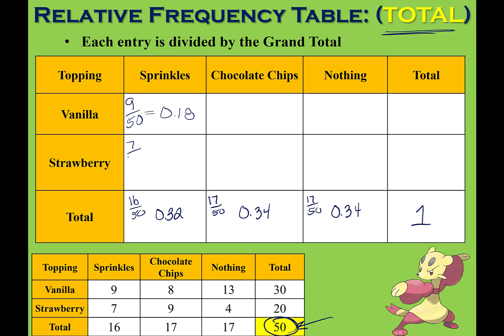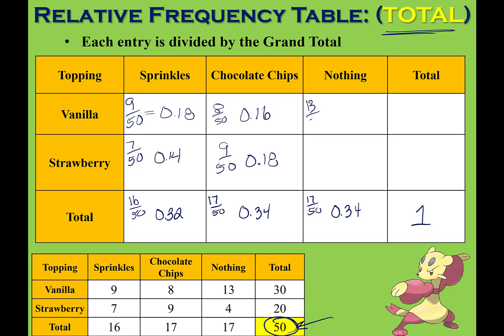For strawberry and sprinkles, there were 7 out of 50, giving me 0.14. Notice that if I add these two boxes together, I get the total below — vanilla plus strawberry with sprinkles equals all of the sprinkles. For chocolate chip, we get 8 out of 50, which gives 0.16. For strawberry and chocolate chip, we get 9 out of 50, giving 0.18. Adding the two chocolate chip boxes gives the total. For nothing as a topping, we have 13 out of 50 for vanilla ice cream, giving 0.26, and 4 out of 50 for strawberry with nothing, giving 0.08.